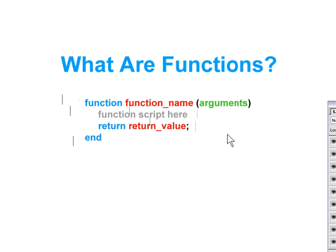Next we've got in the brackets here arguments. Now these are optional — these are variables that are going to be passed to our function. We'll take a look at that a little later in this lesson, but for now suffice to say that this is an optional portion of your function.